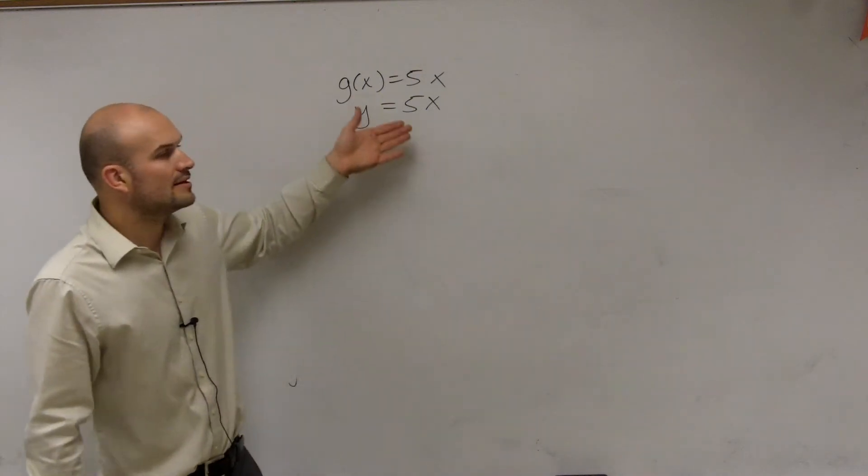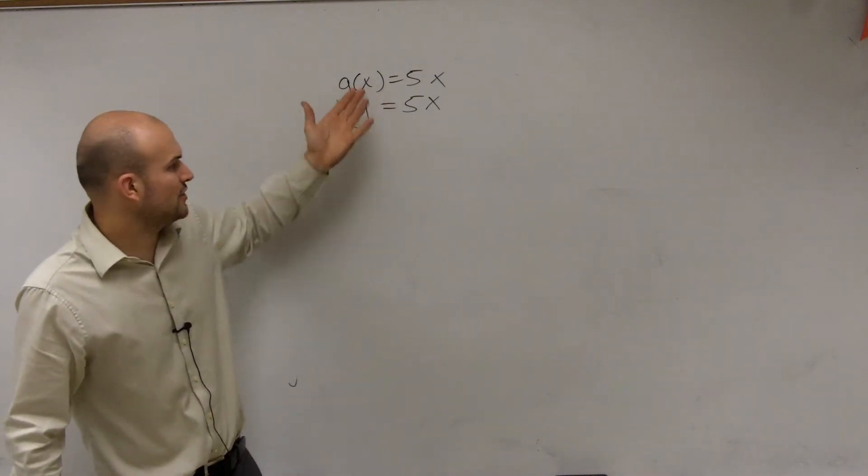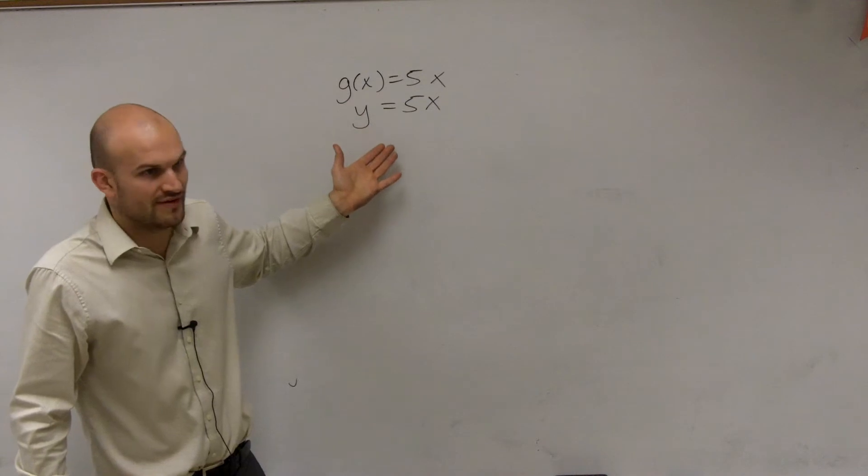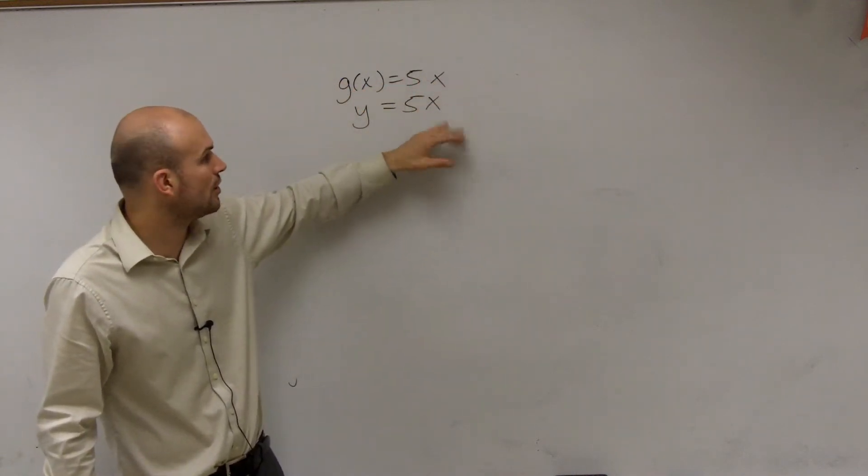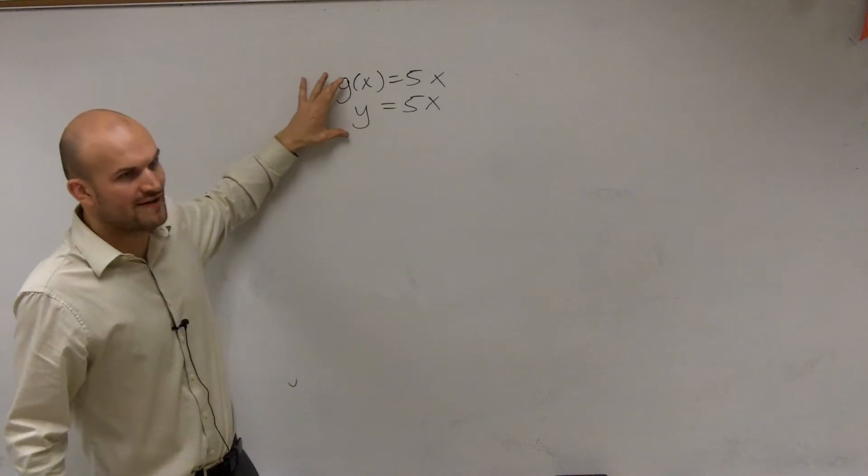The only difference is g(x) is my output value, and y is my output value. So the graph would look exactly the same. They have the same relationship or same rule, but the only difference is the output value.